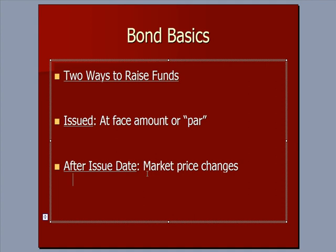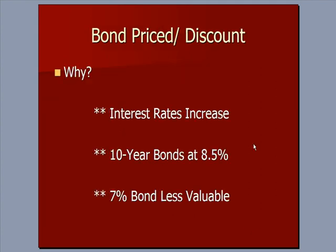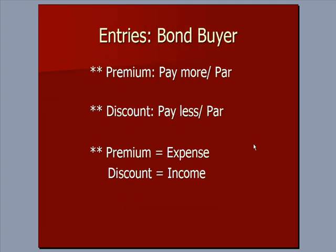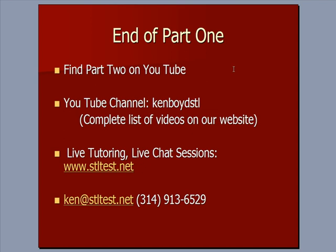So that's what happens when a bond is issued at par, or $1,000. After the issue date, once the bond starts trading between investors, the market price can change. In our next video we're going to find out what happens when a bond is issued at something above or below par — what we'll call a discount or a premium.